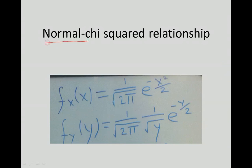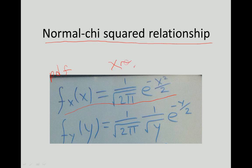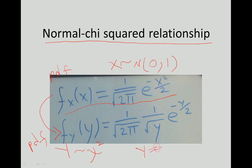In this video I will talk about the normal and chi-squared relationship, and specifically I will show how we can get the probability density function of a chi-squared random variable from a normally distributed random variable. We will look at the PDF of a standard normal random variable, which equals 1 over square root of 2π times the exponent of minus x squared over 2, where y equals x squared.